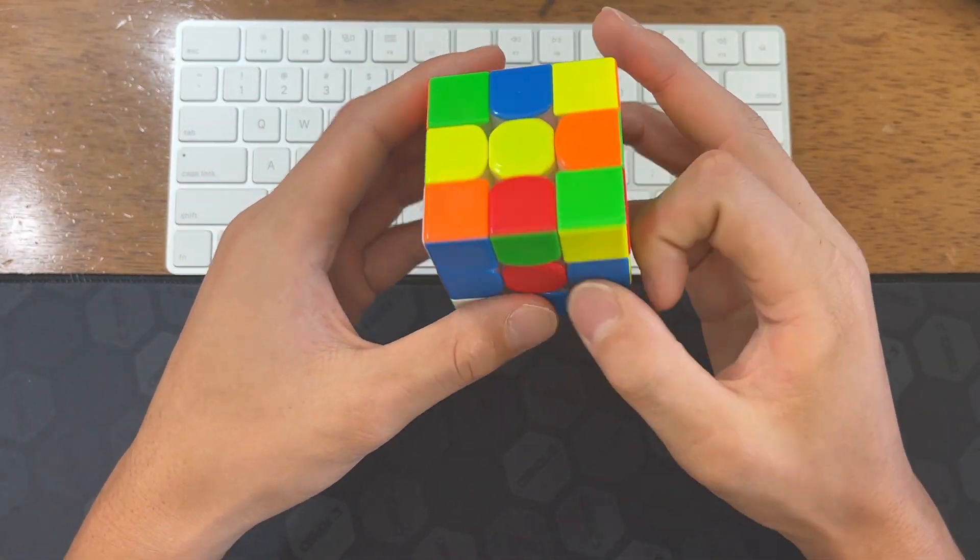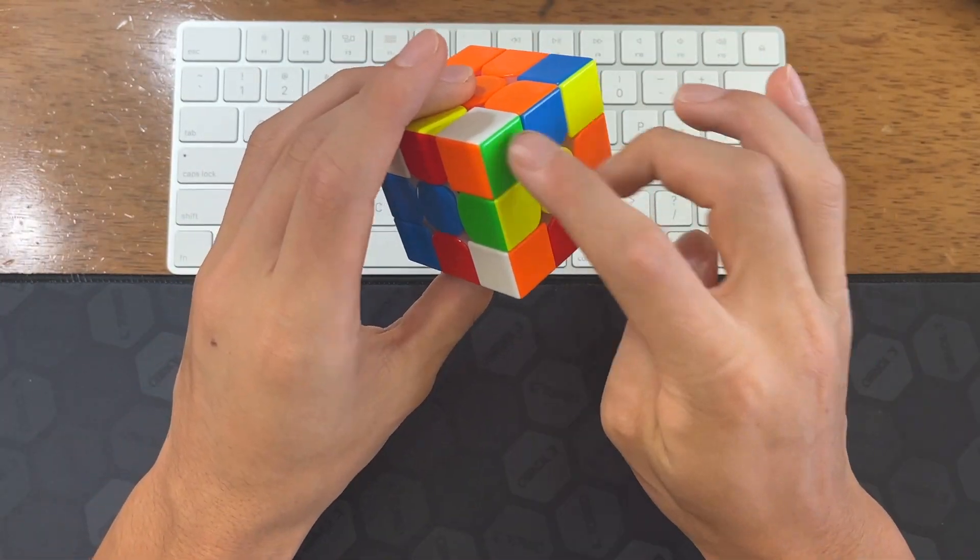And then D2 F and then just solve the cross and then solve your first pair there.